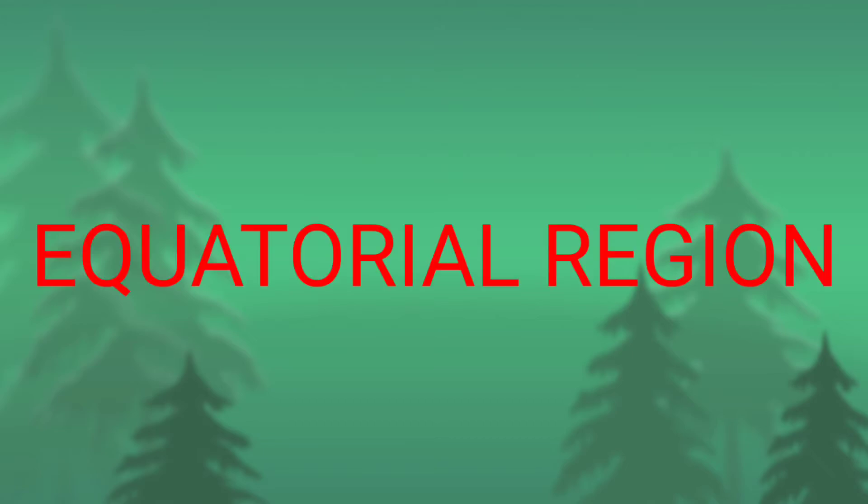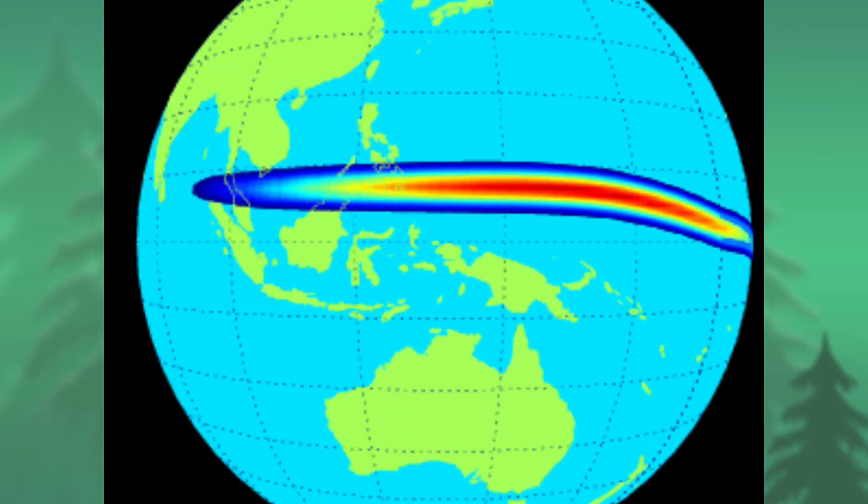Welcome everybody to advanced geography class. Today we will discuss one of the major natural regions of the world, that is the equatorial region. The equatorial region is located on both sides of the equator.